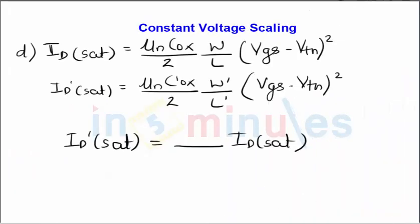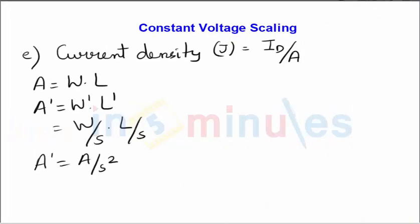ID in saturation is very similar. The oxide capacitance increases by a factor of s, width reduces by a factor of s, length reduces by a factor of s, and the voltages are unchanged. So s and s get cancelled, and ID(sat) equals s times ID(sat) before scaling. Both saturation and linear region currents are increased by a factor of s in constant voltage scaling, whereas in constant field scaling, both were reduced by a factor of s.